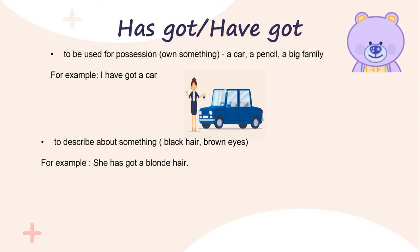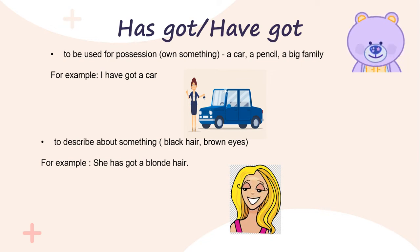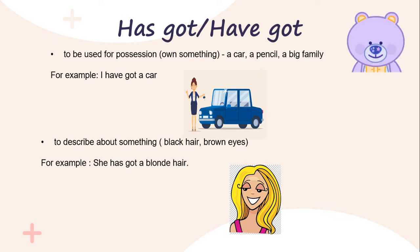For example: she has got blonde hair. When she has got blonde hair, you will use 'has got' or 'have got'. Another example: the elephant has got a long trunk. So when something has a feature to describe, you can use 'has got' or 'have got'.